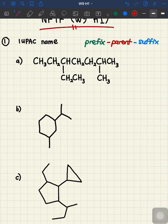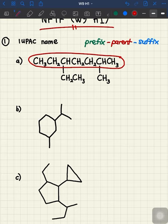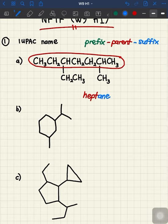The parent is going to be the longest unbranched carbon chain. From this compound we're going to have this chain as our carbon chain, so we have one, two, three, four, five, six, and seven carbons all together. So the parent name combined with the suffix, with seven carbons, is going to be heptane.